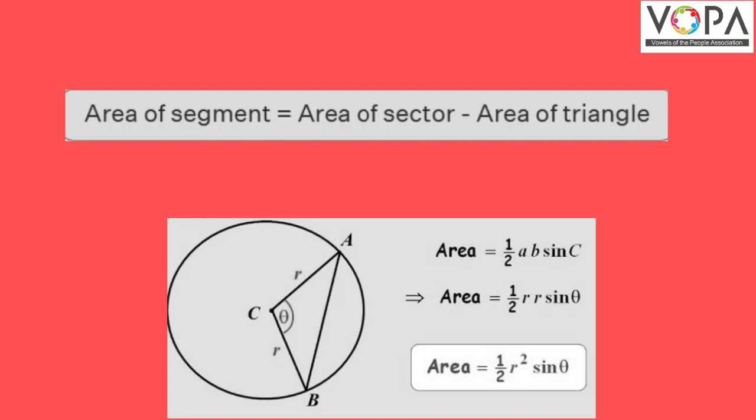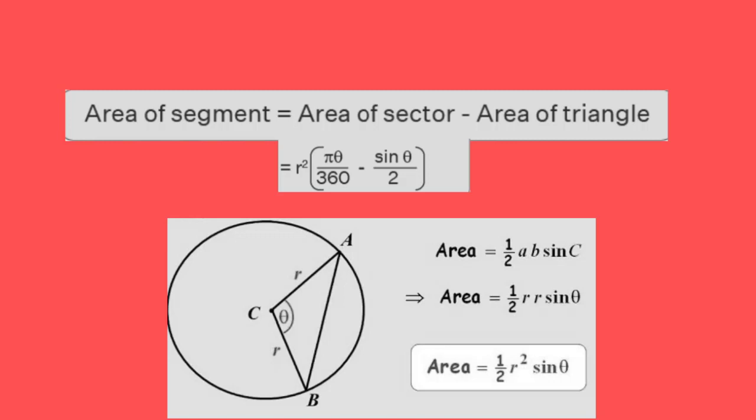That equals R squared times (pi theta divided by 360 minus sine theta divided by 2), where R is the radius and theta is the central angle.